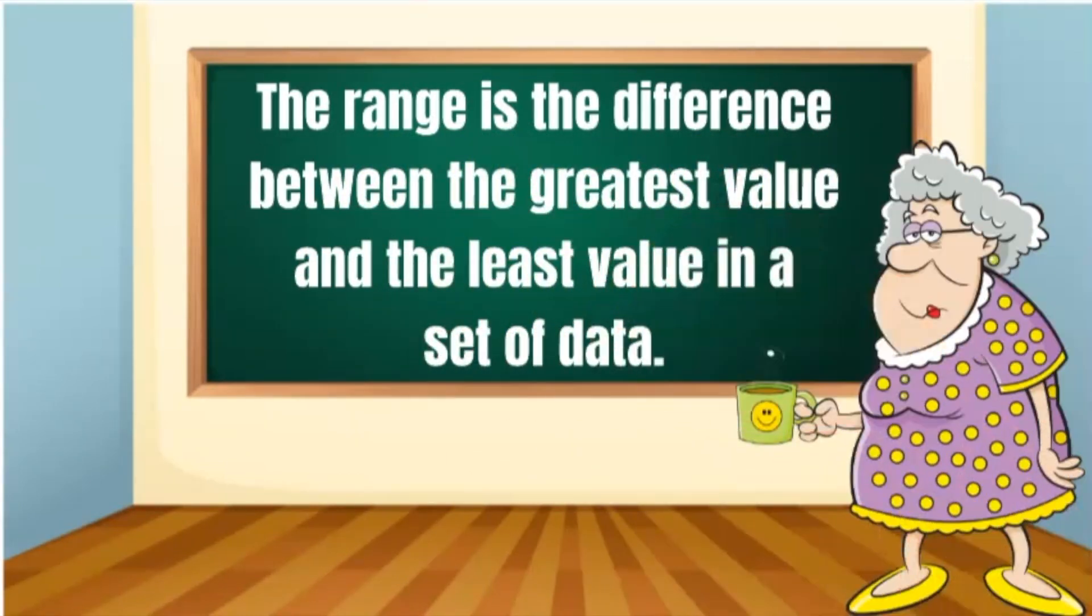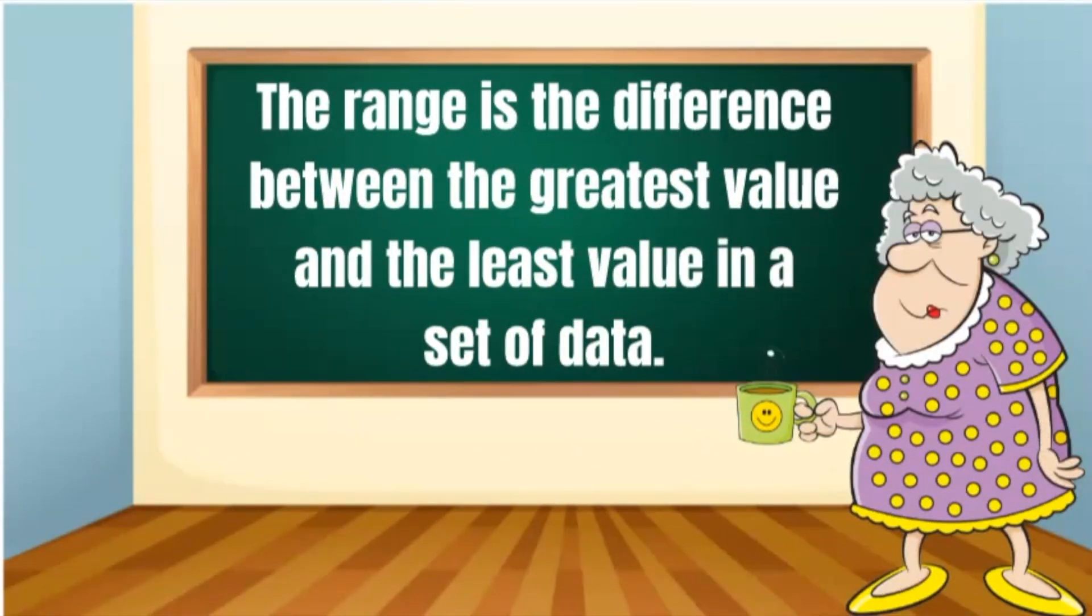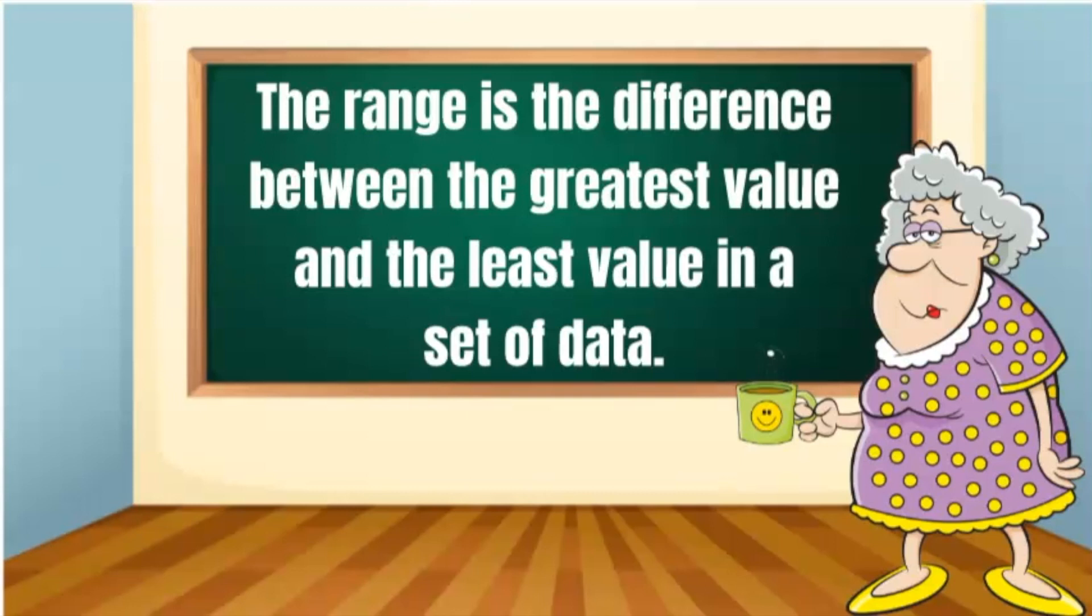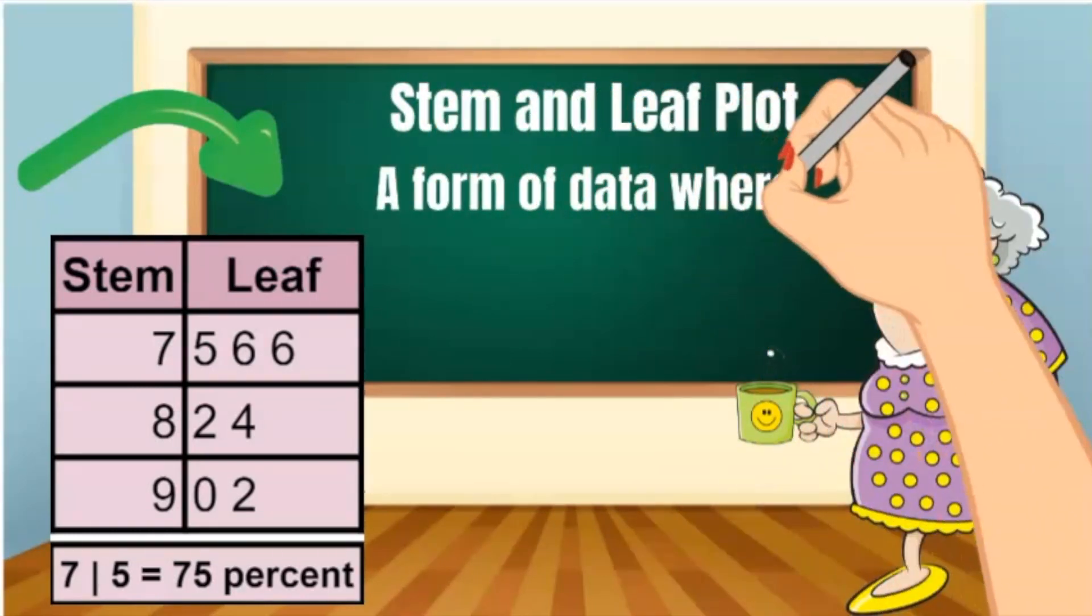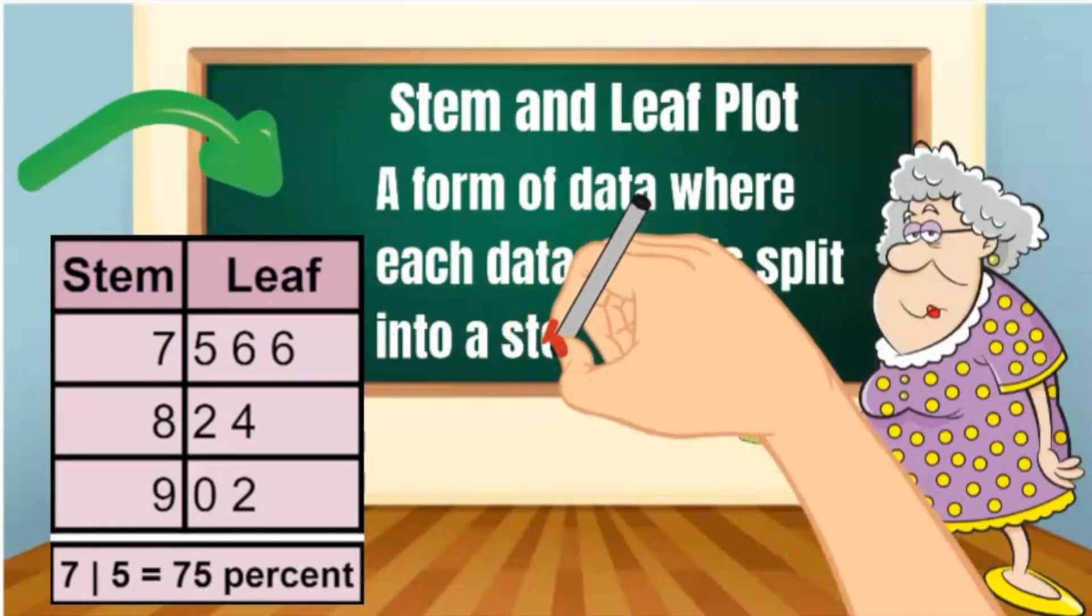Today you're going to find the range of my first and second period test scores for me. The scores for first period are represented on the stem and leaf plot. A stem and leaf plot is a form of data where each data value is split into a stem and a leaf.